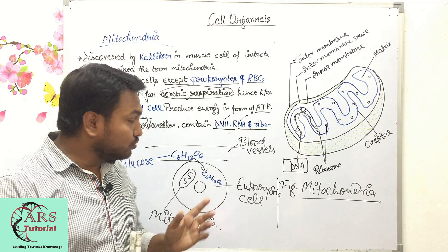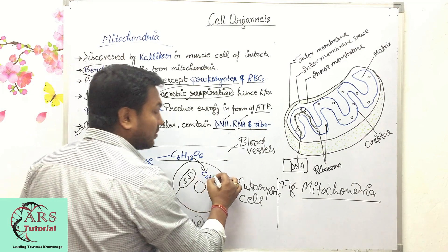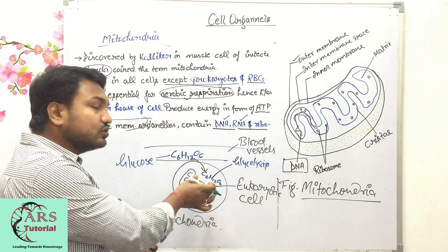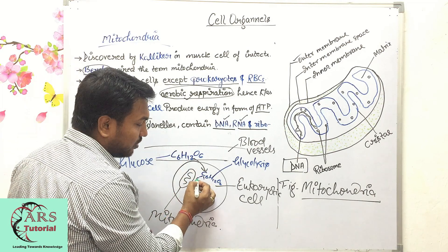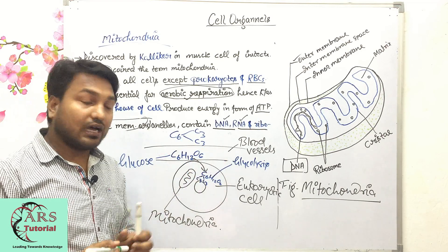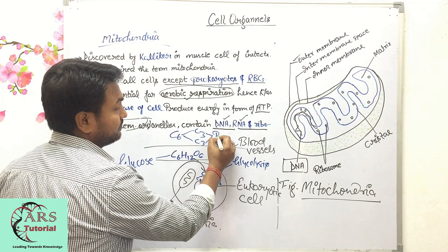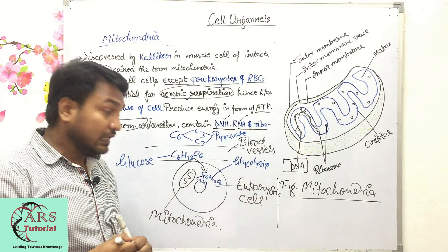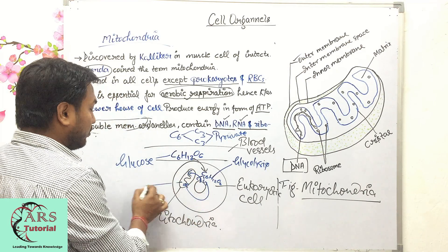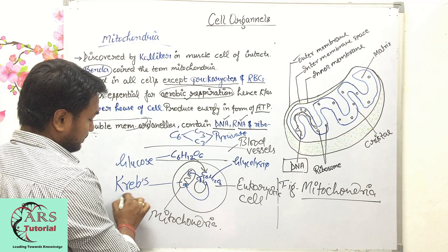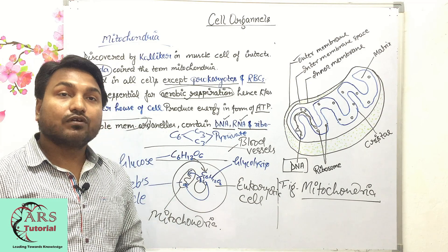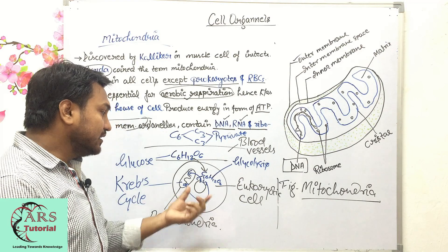How does mitochondria provide energy? Glucose undergoes further breakdown by the process of glycolysis. In glycolysis, the glucose molecule (C₆) is broken down into a C₃ compound. After glycolysis, mitochondria produces energy in the form of ATP from these three-carbon molecules.